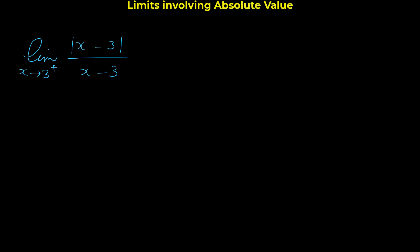Note that if the absolute was not here, you could simply cancel x-3 from the numerator with x-3 from the denominator, and the limit would be 1. So it seems easy, but we have the absolute — so how can we get rid of the absolute value in limits?